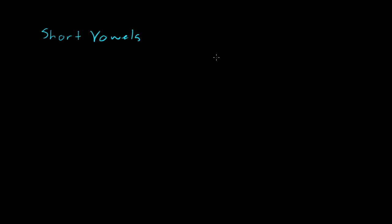Today we're going to go over short vowels. You might have seen in the other videos that I put little marks above or below a letter, and that made a short vowel sound on the letter. These short vowels are called harakat. You should already recognize all those letters and be able to understand what the word sounds like. These short vowels are called harakat, and you can see on the actual word harakat I've put the vowel marks on top.